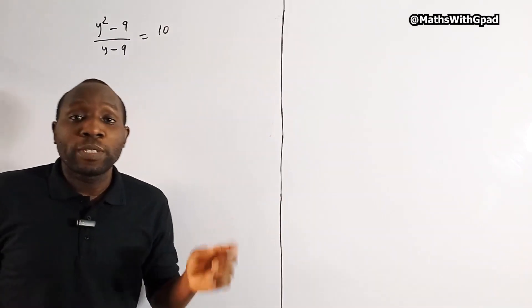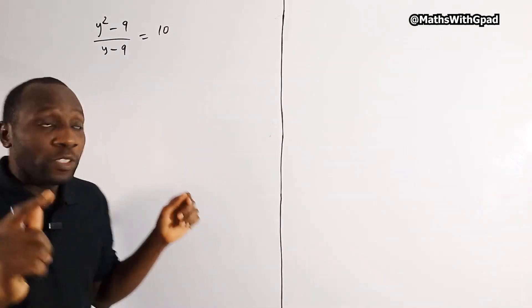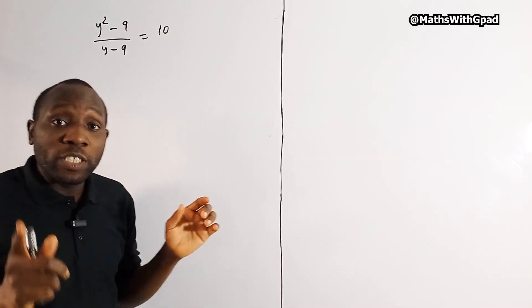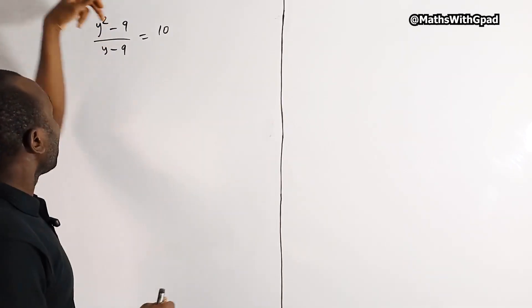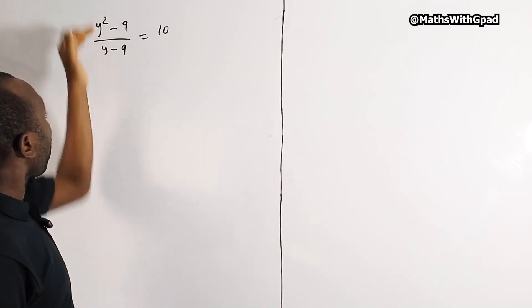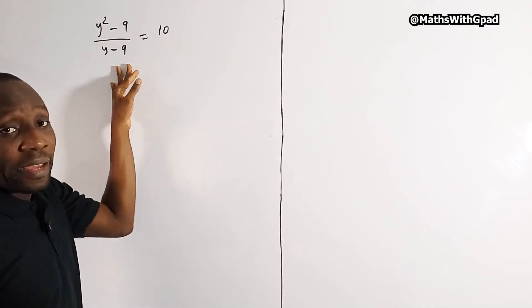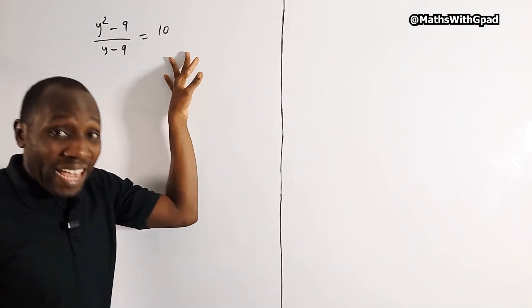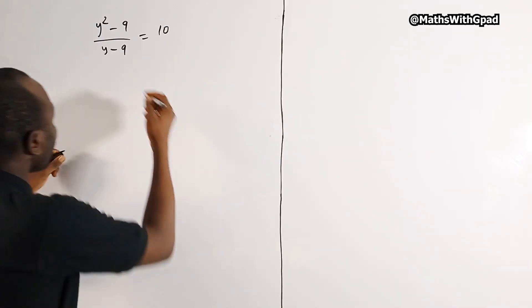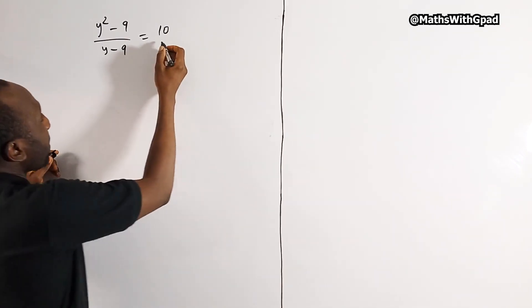Hello, welcome to my YouTube channel. In this video we're going to solve this equation which says y squared minus 9 over y minus 9 is equal to 10. So let's start off.